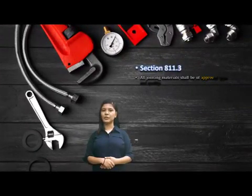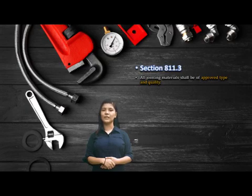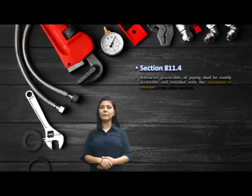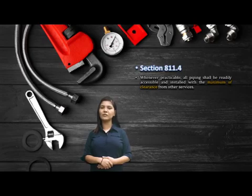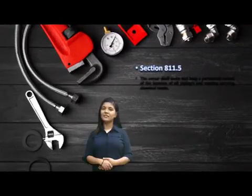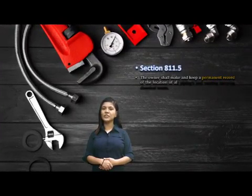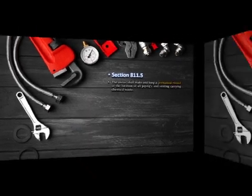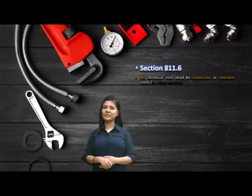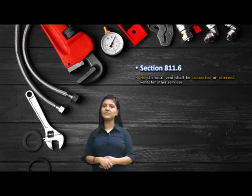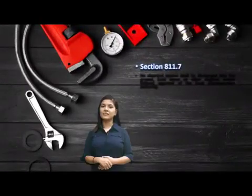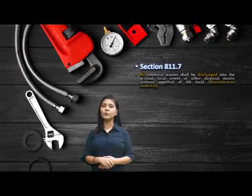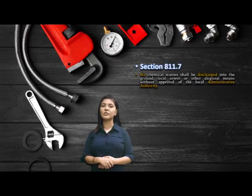Section 811.3: All joining materials shall be of approved type and quality. Section 811.4: Whenever practicable, all pipings shall be readily accessible and installed with a maximum of clearance from other piping. Section 811.5: The owner shall make and keep a permanent record of the location of all pipings and venting carrying chemical waste. Section 811.6: No chemical vent shall be connected to or intersect any other vent or piping. Section 811.7: No chemical waste shall be discharged into the ground, local sewer, or other disposal means without approval of the local Administrative Authority.